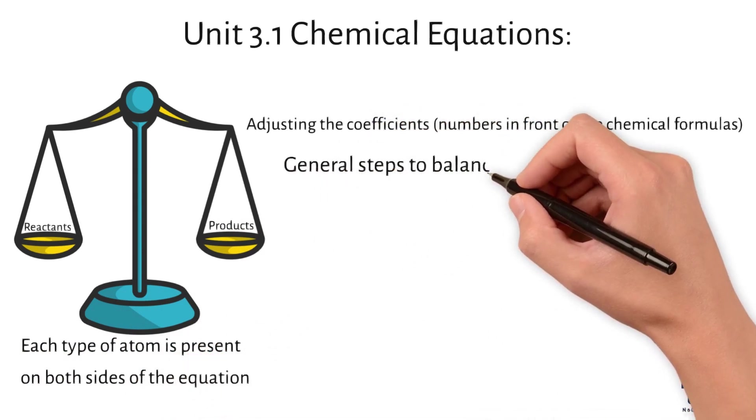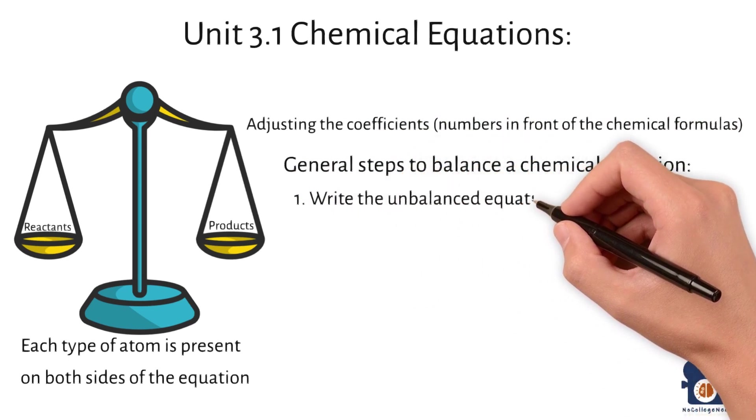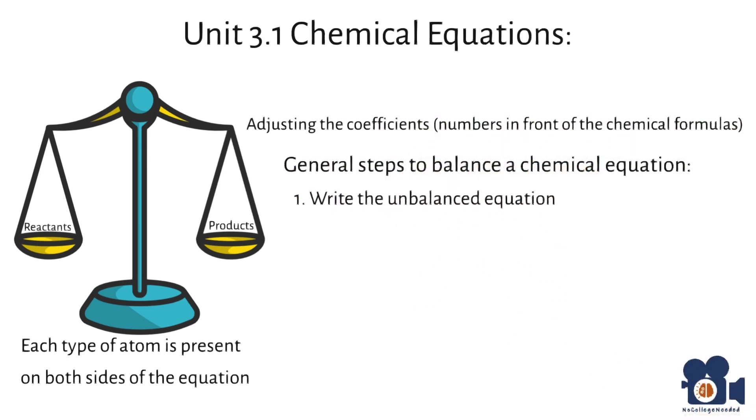Here are the general steps to balance a chemical equation. Number one, write the unbalanced equation, starting by writing the chemical equation with the correct chemical formulas for the reactants and products.